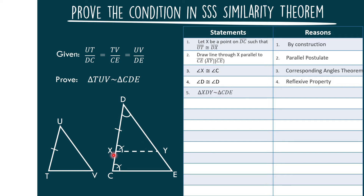Then we can conclude that triangle XDY is similar to triangle CDE by AA similarity. So let us have statement number 6.